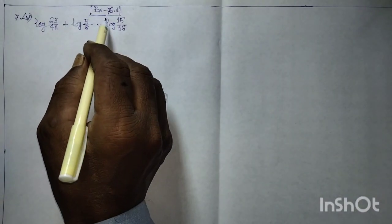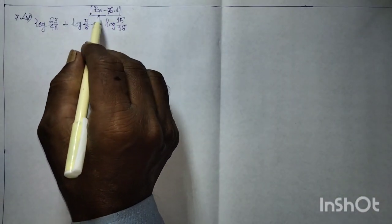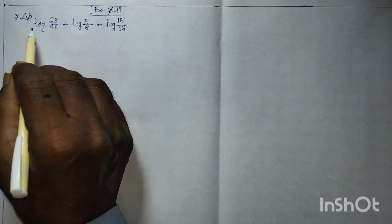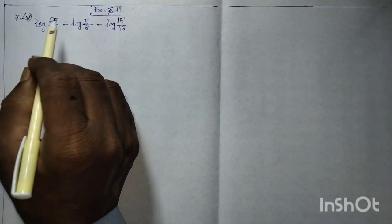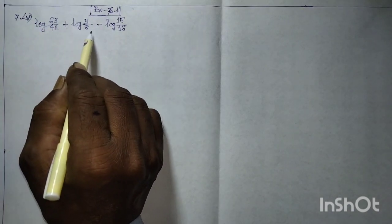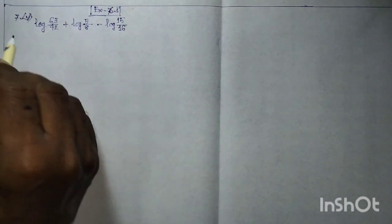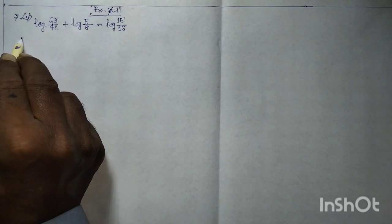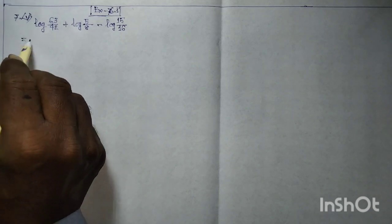Advanced mathematics question number 75: log(63/42) + log(5/8) minus log(15/16). Here you can apply log properties.